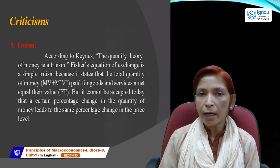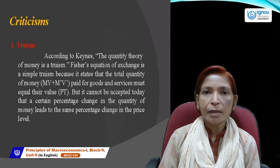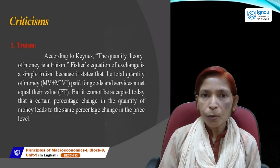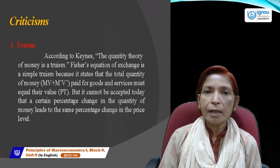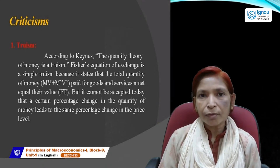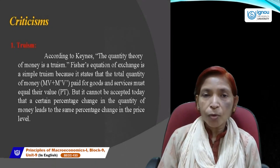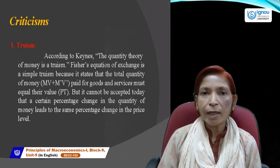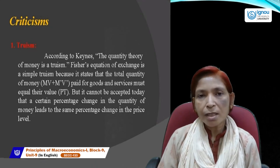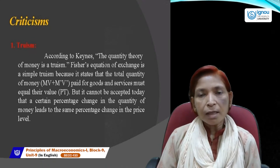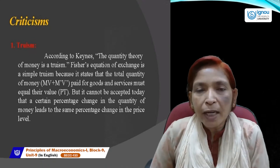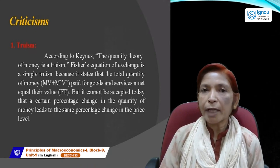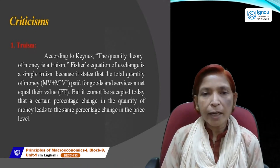Keynes said that Fisher ignores the process in between the increase in quantity of money and the rise in general price level. Fisher says there is a direct and proportionate relationship, but does not explain the whole process — how many steps are involved before the price level is affected by an increase in money supply. That process is ignored by Irving Fisher, which is why his theory was criticized by Cambridge University economists.